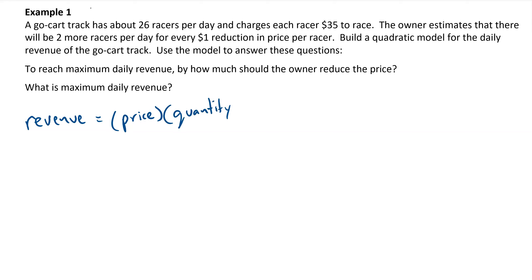Keep in mind that revenue can be calculated by multiplying the price of an item times the quantity sold. And that's exactly what our model is going to use. I have information about the price, $35 for each racer, and the quantity, 26 racers. But I want to create a model that has some motion to it. I can reduce the price by $1, and the owner would expect two more racers. So I'm going to take a variable x to represent the number of price reductions.